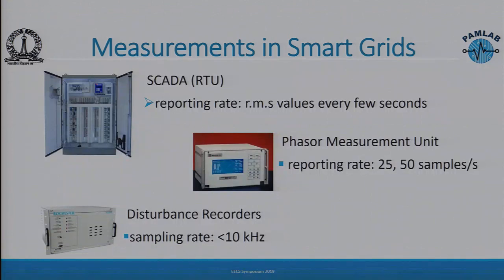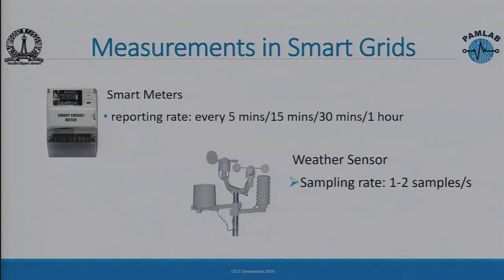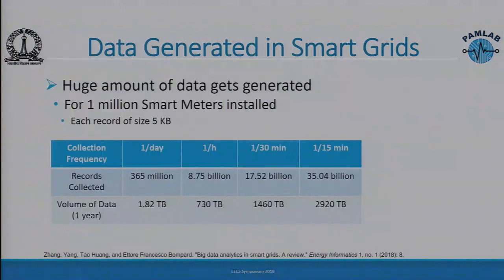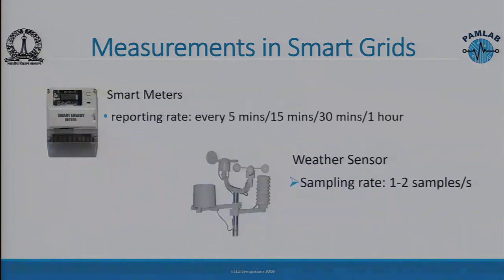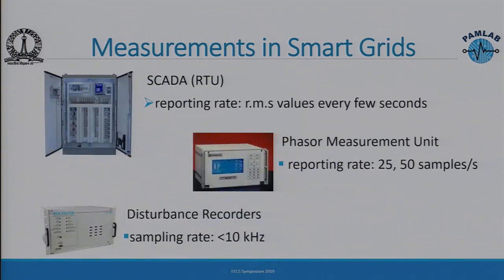Disturbance recorders log information whenever there is a fault, at a sampling rate of less than 10 kHz. Smart meters report every 5, 15, 30, or 60 minutes. Due to renewables we also have weather sensors sampling at 1 to 2 samples per second. All these sensors throughout the country are constantly generating data. For just 1 million smart meters reporting every 15 minutes, the data volume is 2920 terabytes per year — and that is just smart meters, not counting SCADA, PMUs, and disturbance recorders.